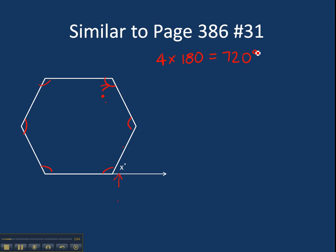So that's how many degrees this entire hexagon has. Since there's six angles and they're all exactly the same, I'm going to do 720 divided by 6, and I'm going to end up with 120 degrees.